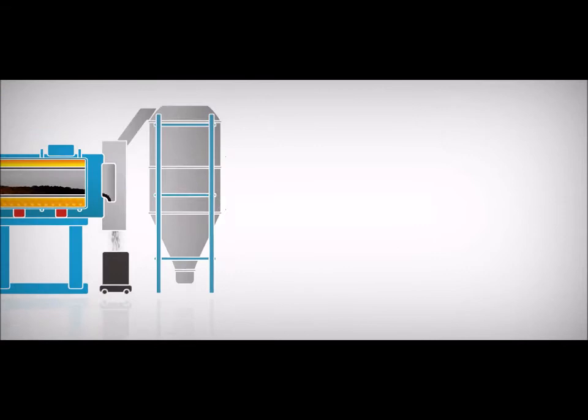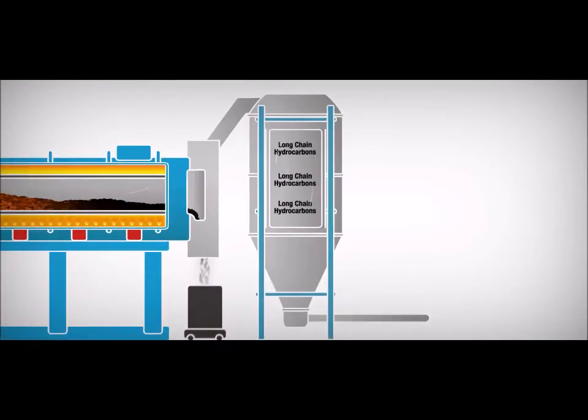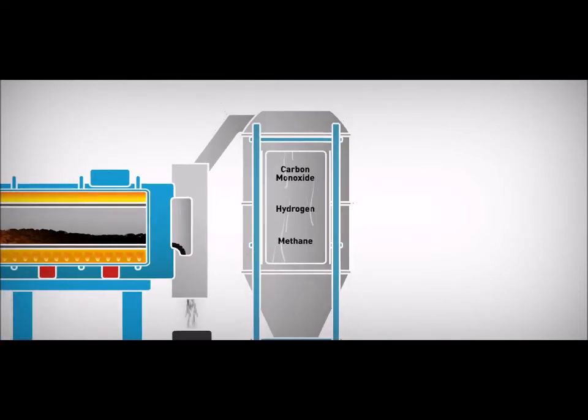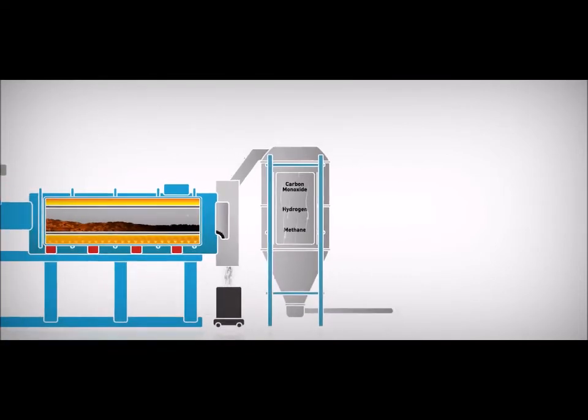The syngas goes through a reforming process to convert the long chain carbons into more useful hydrocarbons such as methane, plus carbon monoxide and hydrogen.